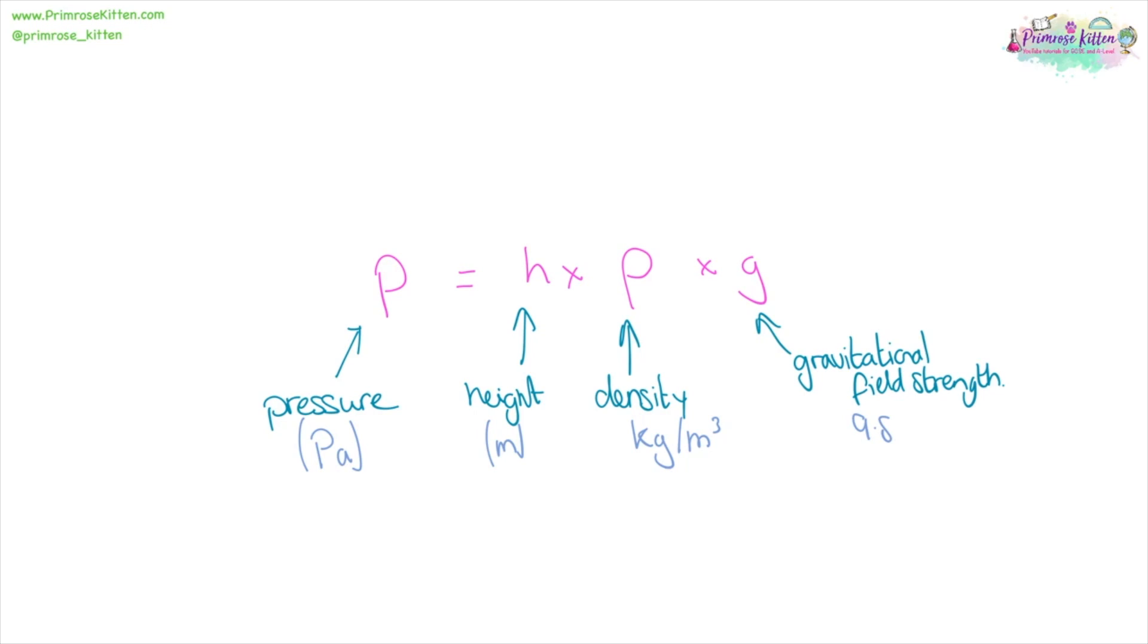Pressure with a P equals height times density, which is a lowercase rho, times gravitational field strength. Pressure is measured in pascals, height is measured in meters, density is measured in kilograms per meters cubed, and gravitational field strength is 9.8 newtons per kilogram.